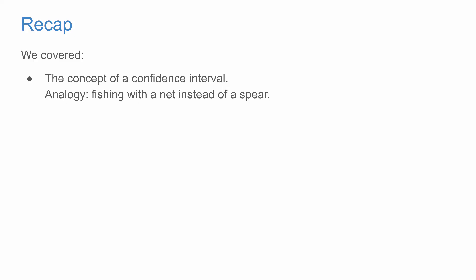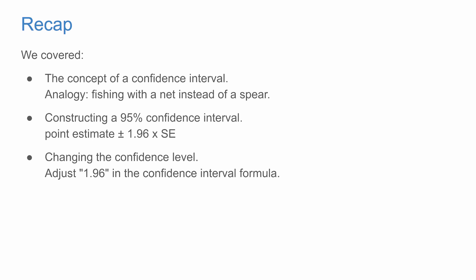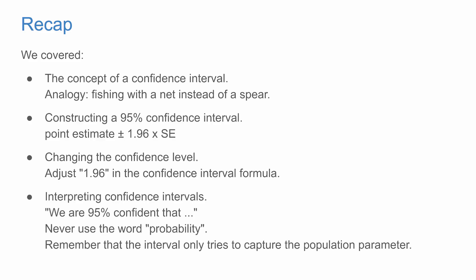To recap, we covered the concept of a confidence interval, which we used as an analogy with fishing with a net instead of a spear. How to construct a 95% confidence interval using a point estimate plus minus 1.96 times the standard error. We also discussed how to change the confidence level, where we adjust 1.96 to a different Z* value corresponding to the chosen confidence level. We discussed how to interpret confidence intervals using language such as 'we are 95% confident that...' and we never used the word probability. Always remember that the confidence interval only tries to capture the population parameter — it doesn't try to capture individual observations and says nothing about future samples.